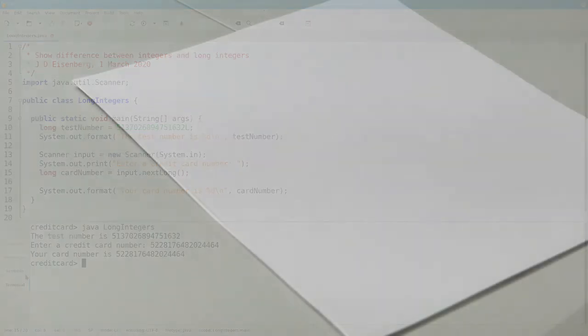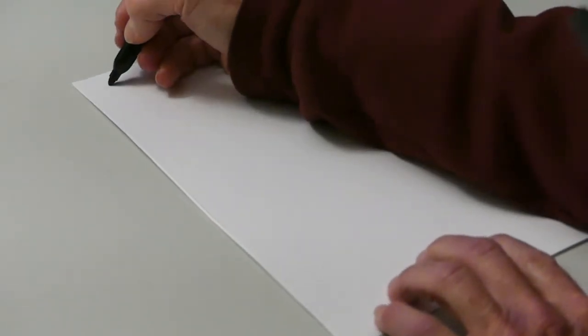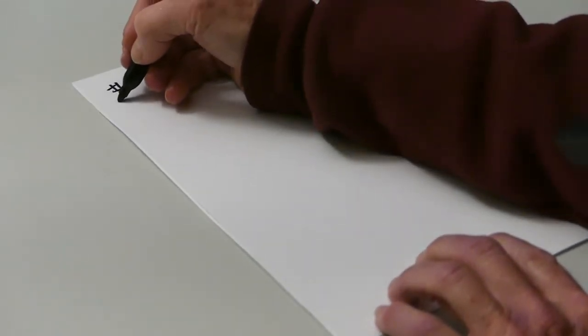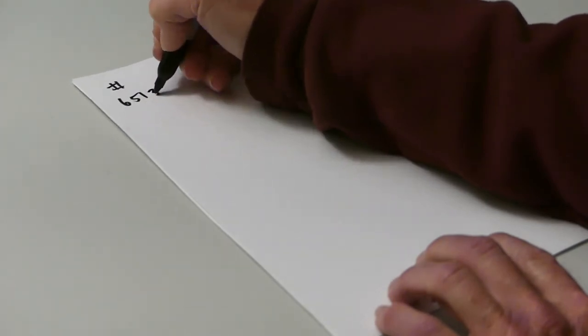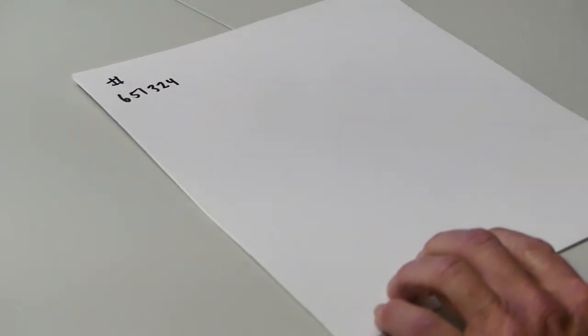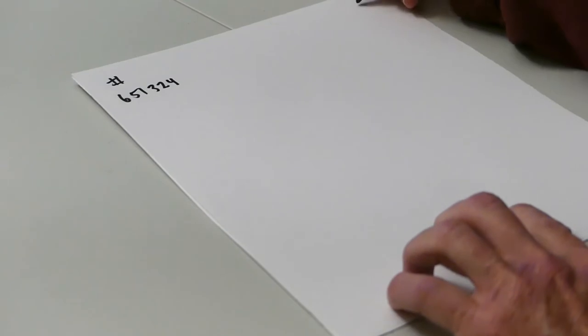In the credit card program, you're going to need to write methods to sum all the odd digits, and then to sum the doubled even digits. The key to both of these is to be able to extract individual digits from a number. Let's think about how to get the individual digits. We'll start with a smaller number, like 651324, and our sum so far is going to be 0.